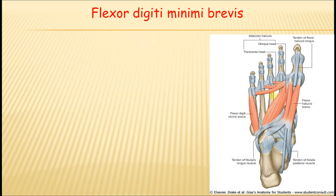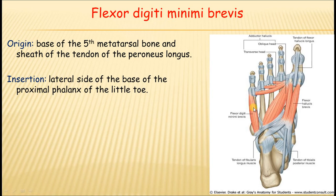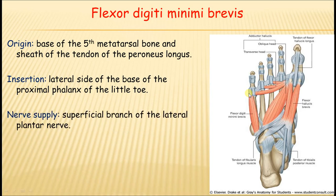Flexor digiti minimi brevis arises from the plantar surface of the fifth metatarsal and from the sheath of peroneus longus. It inserts by a narrow tendon into the base of the proximal phalanx of the little toe along with the abductor digiti minimi. Nerve supply is by the superficial branch of the lateral plantar nerve; its action is plantar flexion of the little toe.